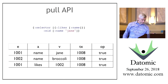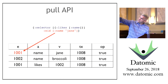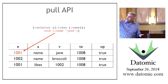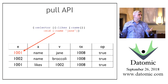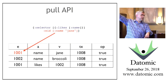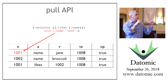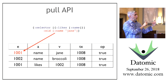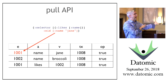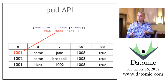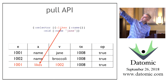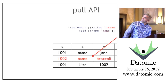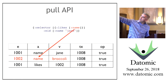This is a pull pattern. It finds the entity ID whose name is Jane—that's called a lookup ref. When you see a tuple like that with two pieces, it means: I don't want to talk about entity IDs; I want to talk about things by their unique identifier. This presumes name is a unique attribute. Any place you would use an entity ID, you can drop in a tuple of attribute/value. The selector then drills in through 'likes' and pulls out the name under likes, returning 'broccoli'.